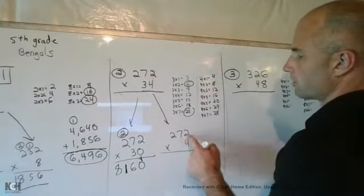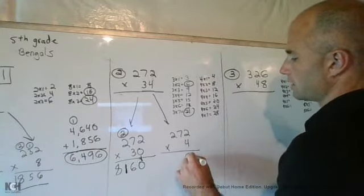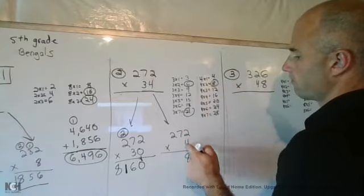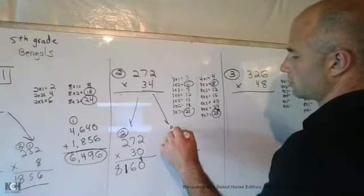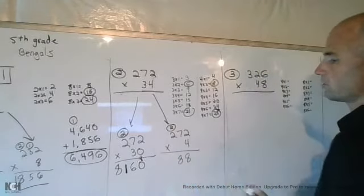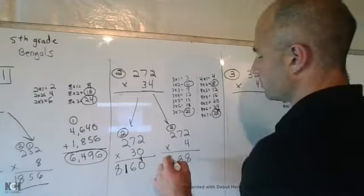Next I'll do 272 times 4. 4 times 2 is 8. 4 times 7 is 28. Don't forget to leave the 8 and carry the 2. 4 times 2 is 8 again plus 2 gives you 10.